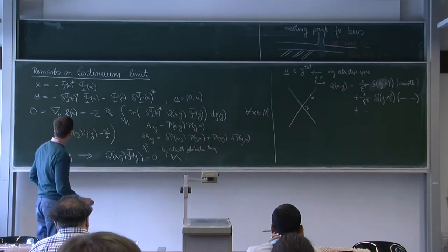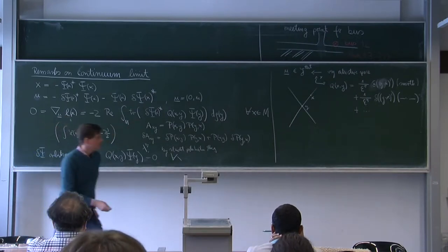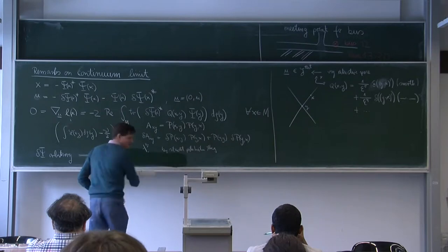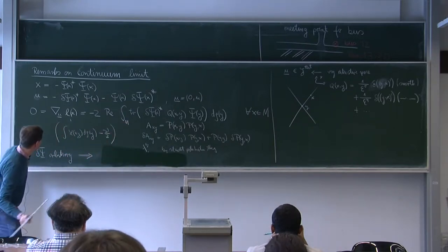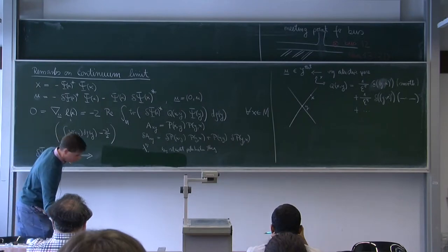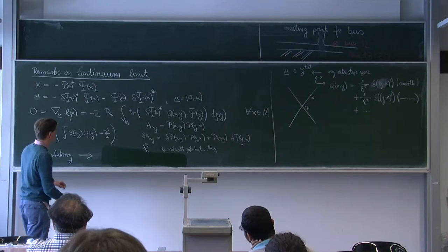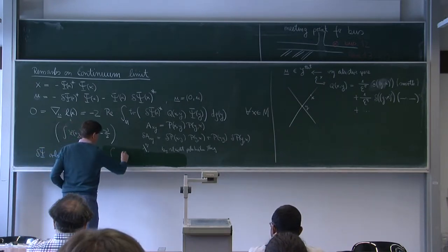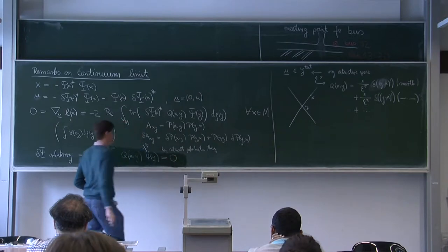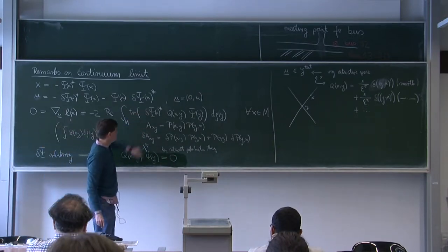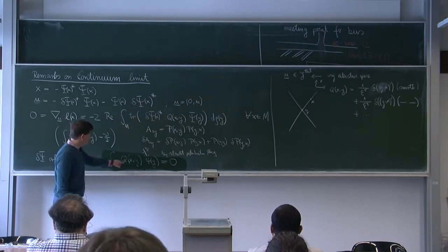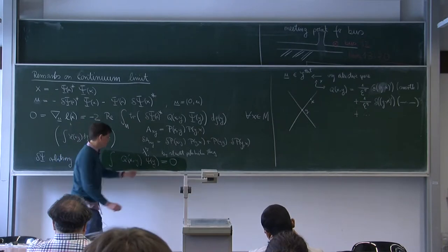Since delta psi is arbitrary, q(x,y) times psi(y) integrated equals zero. This is an operator equation on the Hilbert space — it should hold for all u in the Hilbert space in principle. But now we choose the test space such that we only allow for specific u's.